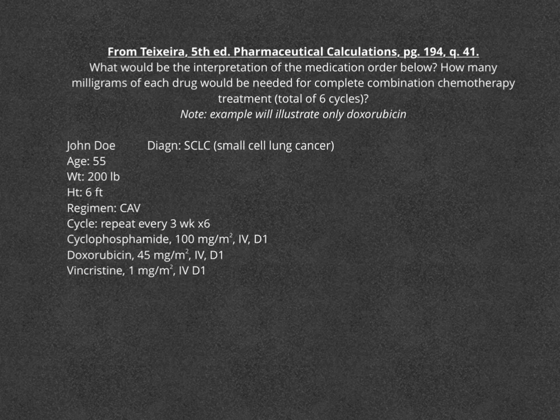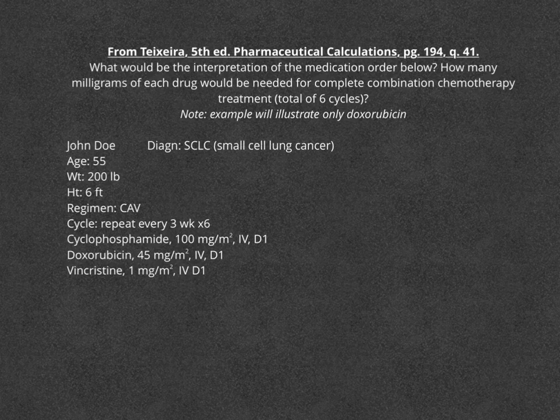In this example, we're going to review how to calculate the amount of each drug to complete a combination chemotherapy treatment. You may see a total of a certain number of cycles where you're asked how much of each drug would be needed for the entirety of the treatment. In this example, I'm only going to illustrate doxorubicin. This comes from the fifth edition of the textbook, page 194, question number 41.